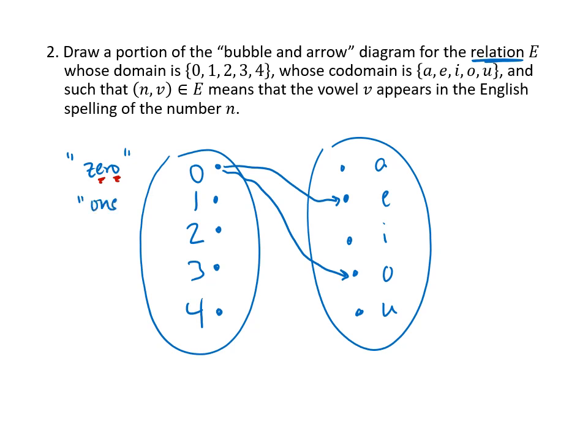Next, we have the word one, which also has an O and an E. So 1 points to E and 1 points to O. The word two only contains O, so 2 only points to O. Now, even though we only have one arrow pointing out of the 2, this still isn't a function because any time we have a relation where you have more than one arrow pointing out of a dot, that just breaks it. It's not a function at that point. Three only contains the vowel E, so 3 points to E. And then four contains the vowels O and U, so 4 points to O and 4 points to U.